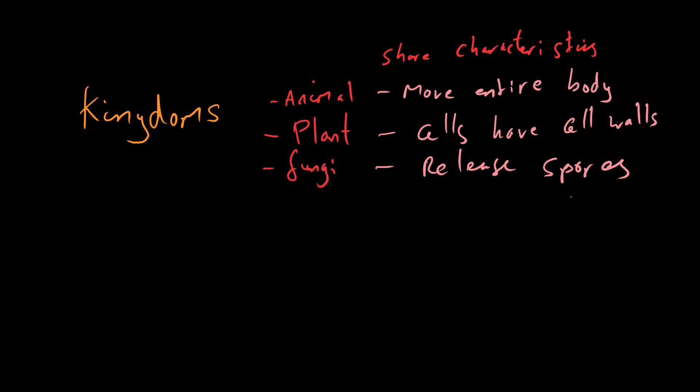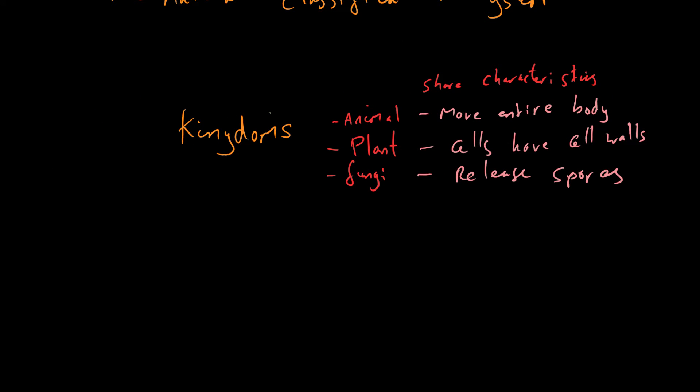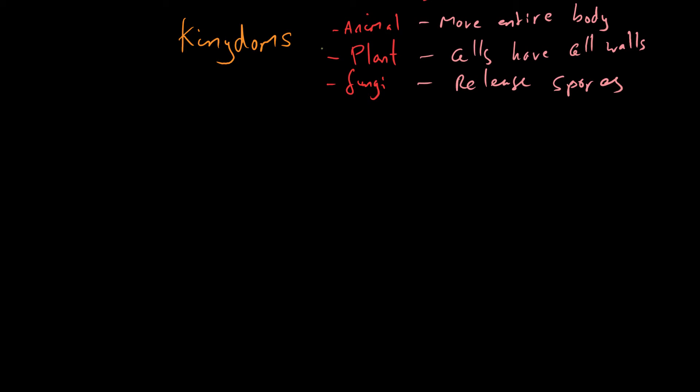And so you can see that different characteristics are relevant to each kingdom. And so organisms are put into those kingdoms depending on those characteristics. If you find a new organism that no one's ever seen before and it releases spores, it's likely that that's going to go in the fungi kingdom. And then the groups get smaller. So kingdom is an example of a large grouping. There are loads of different types of animals.